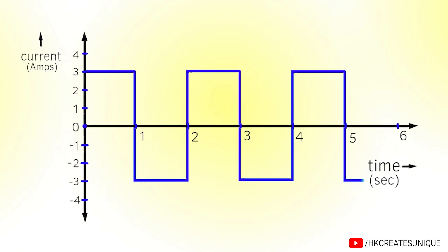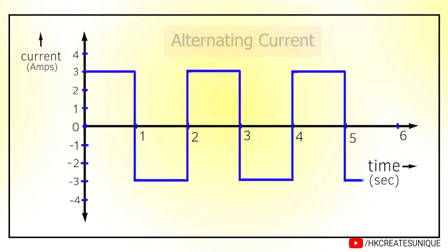This current alternates from positive to negative, then again from negative to positive and so on. This type of current is called alternating current.